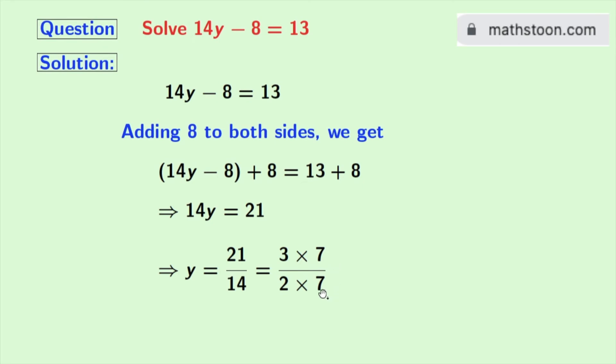Now look, in both the numerator and the denominator, we have 7. So it gets cancelled, and we have 3 by 2.